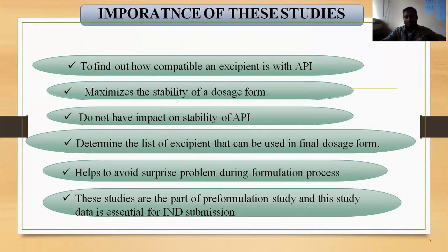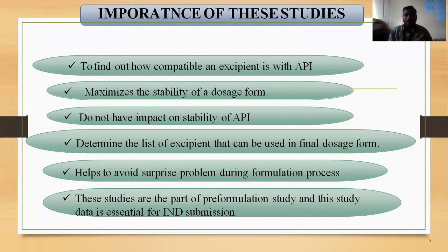What is the importance of these studies? The main importance is to find how compatible an excipient is. For example, when preparing a paracetamol tablet — the API — all excipients such as binders, fillers, disintegrating agents, lubricating agents, and flavoring agents should be compatible with the active pharmaceutical ingredient. If they show interaction with each other, the formulation becomes unstable, and an unstable formulation cannot show proper bioavailability.